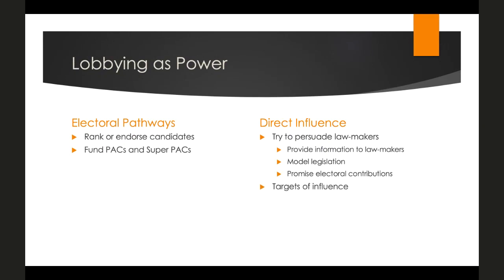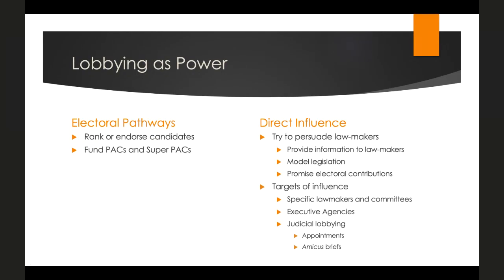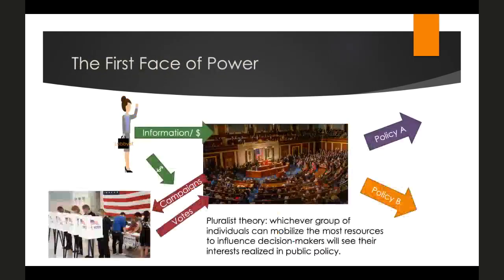Lobbyists can promise electoral contributions — either directly to campaigns or to super PACs — and can influence their members to contribute to those campaigns. Lobbyists target not just Congress but also executive agencies, trying to influence how laws are interpreted and enforced. They also engage in judicial lobbying — trying to influence judicial appointments. The Federalist Society, for example, provides a list of approved conservative judicial nominees to the president. Interest groups can also write amicus curiae briefs to try to influence justices on how they should decide cases.